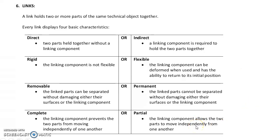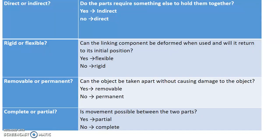A partial link allows two parts to move independently from one another — they are attached yet allowed to move. For instance, a doorknob has a piece attached to another piece but allows a rotation movement without taking it apart. A laptop screen can swing back and forth — the pieces are attached together but allow movement. That is an example of a partial link.